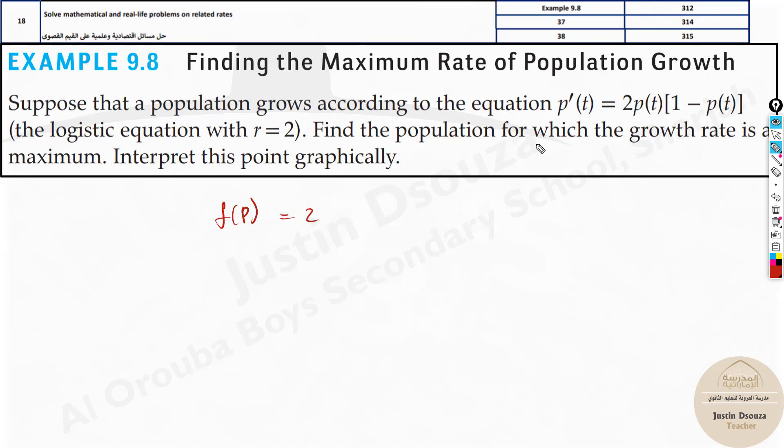This is 2 times, instead of writing p(t) all the time, I just write it as p times (1 minus p). You can just multiply it inside, it will be 2p minus 2p squared. This is the function of p.